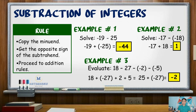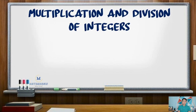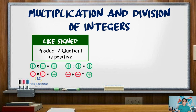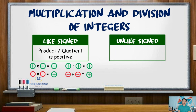Now, for multiplication and division of integers, you just have to remember two rules for signs. When multiplying or dividing like signed integers — positive times positive, negative times negative, positive divided by positive, or negative divided by negative — the product and quotient is always positive. For unlike signed integers, the product and quotient is negative.